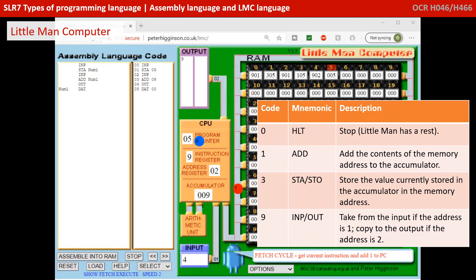Now we fetch the next instruction, incrementing the program counter as always. This is 0 0 0 5, and when we take the opcode — which is the 0 — as we can see from our table, this is going to halt the program. So effectively this program has done 5 plus 4, stored the result 9 in the accumulator, and outputted it to the user.